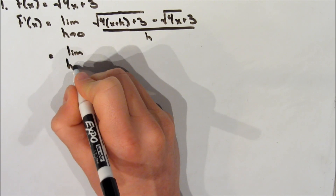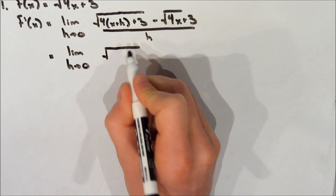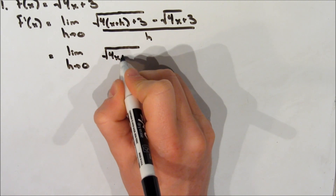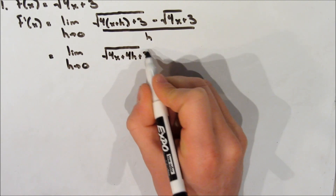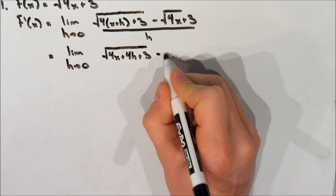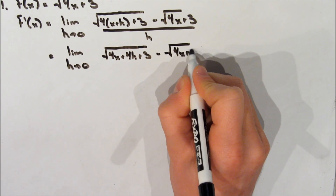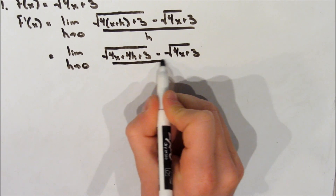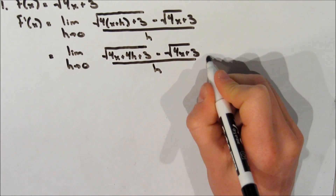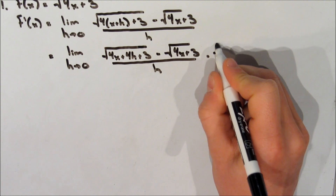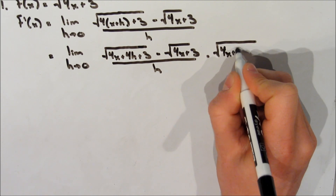On the next line, we're going to expand the terms inside the square roots. So we end up with the square root of 4x plus 4h plus 3, minus the square root of 4x plus 3, all over h. Now we're going to do a little trick — we're going to multiply by 1 in such a way that we can cancel out some terms.